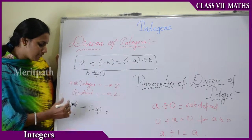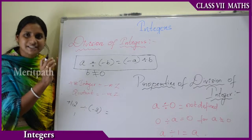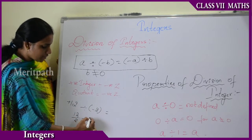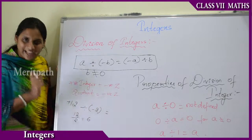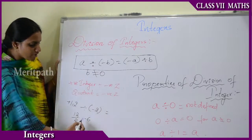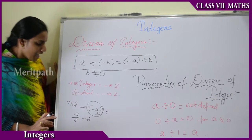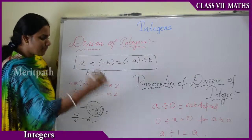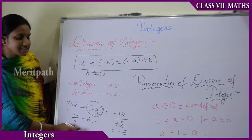To divide integers, first divide the whole numbers without checking the signs — that is, 12 divided by 2 equals 6. Then check the signs: if any one of the two elements has a negative sign, the quotient is also negative. So plus 12 divided by minus 2 gives minus 6.